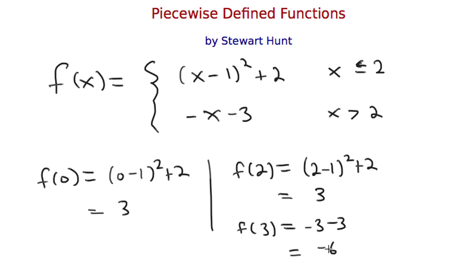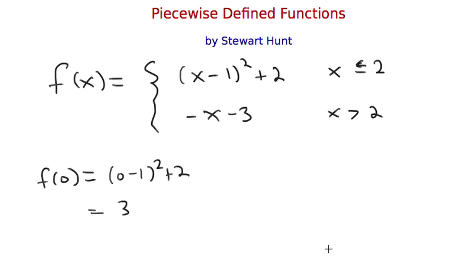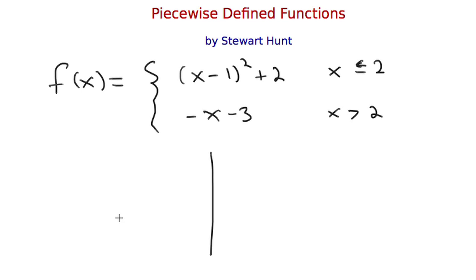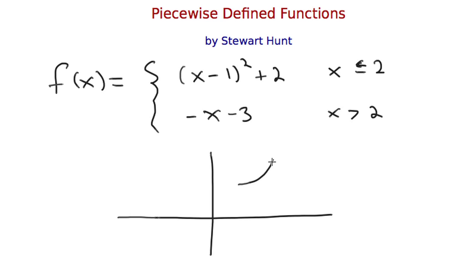So this is how you evaluate the function — the value depends on which piece you're in. But now let's take a look at graphing this. Let's draw our x and y axes. For the first piece, I'm going to pretend I'm graphing x minus 1 squared plus 2. This is a parabola that opens up, shifted to the right 1 unit and up 2.